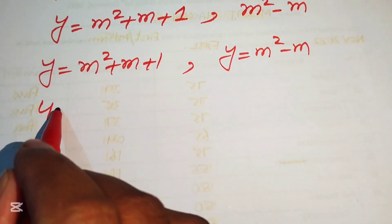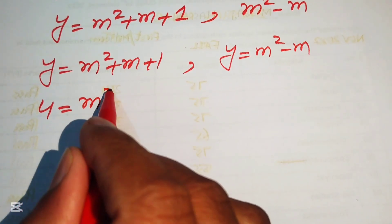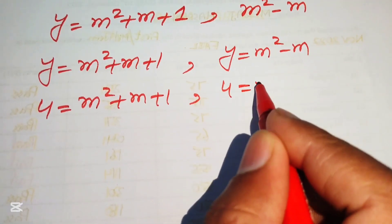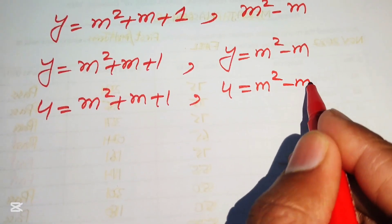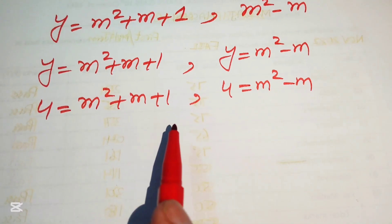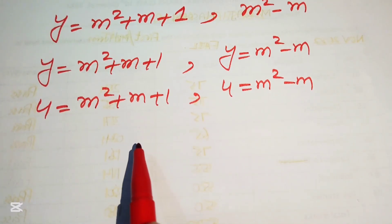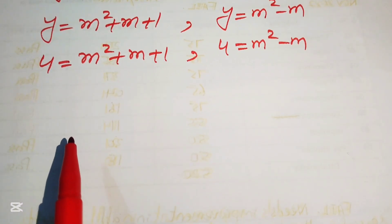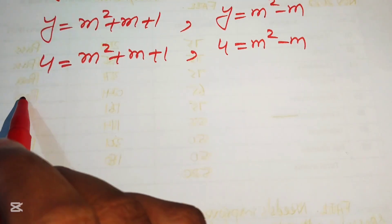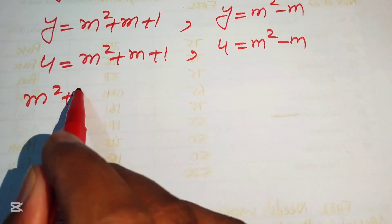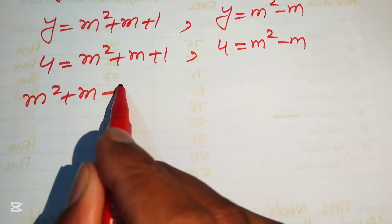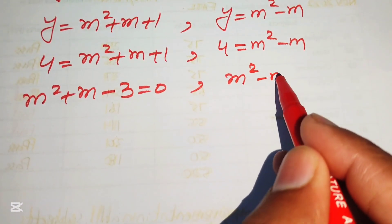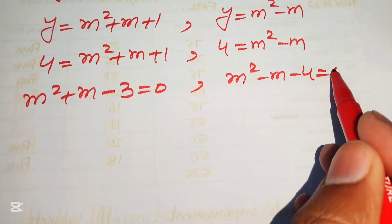Back-substituting y = m²: in Case 1, m² = m² + m + 1, which gives m² + m - 3 = 0 after moving 4 to the right (noting y = m² means m² = 4 originally). In Case 2, m² = m² - m, giving m² - m - 4 = 0.